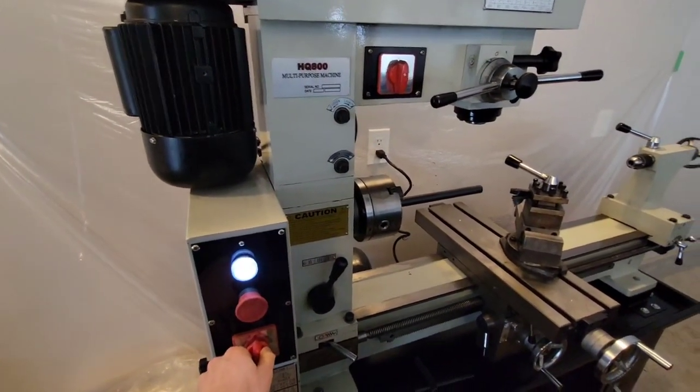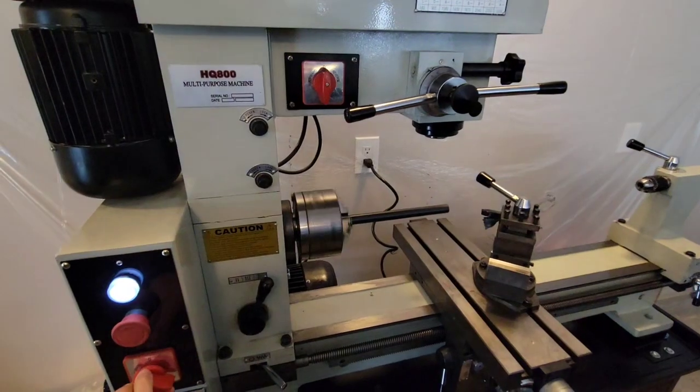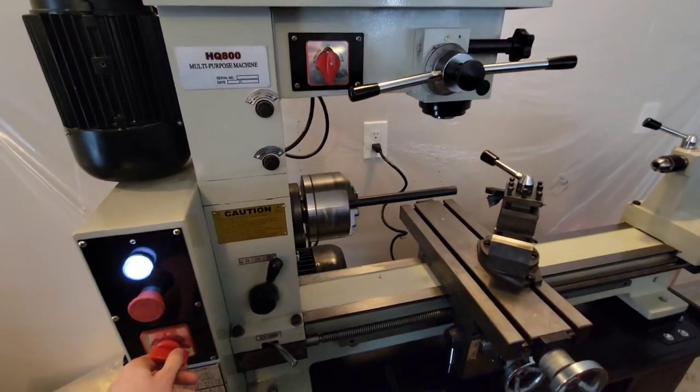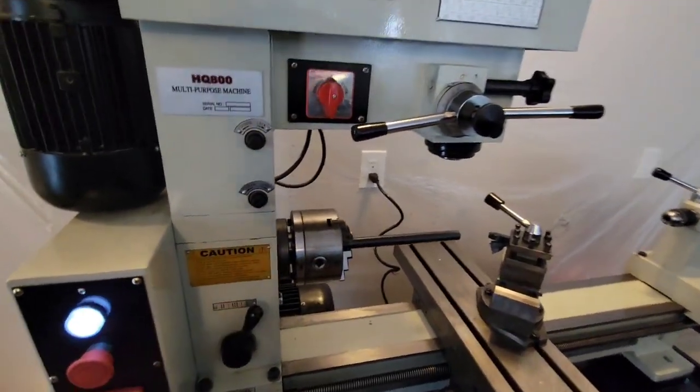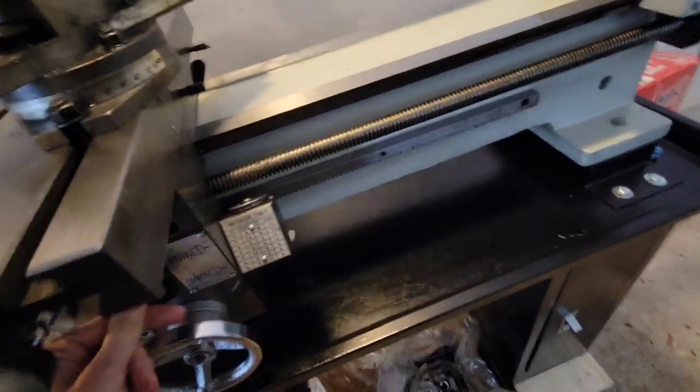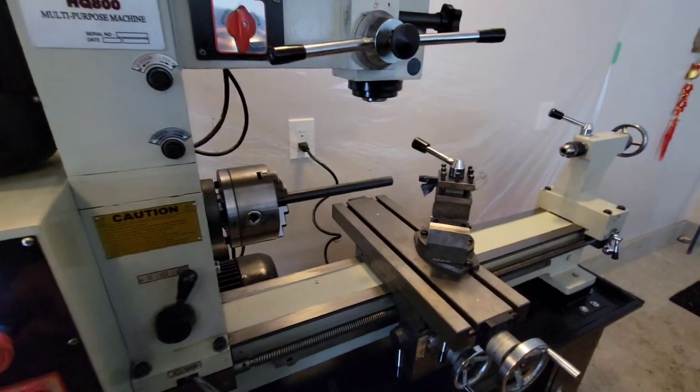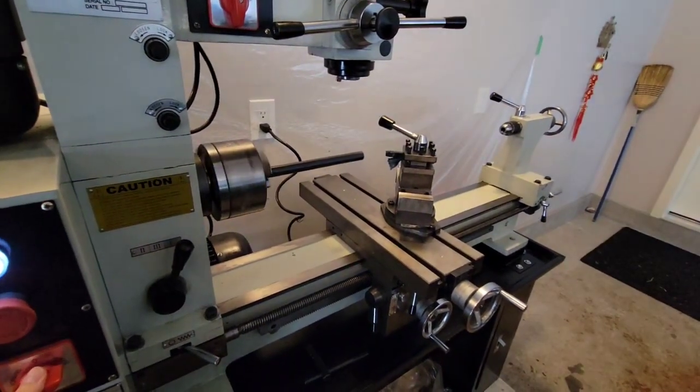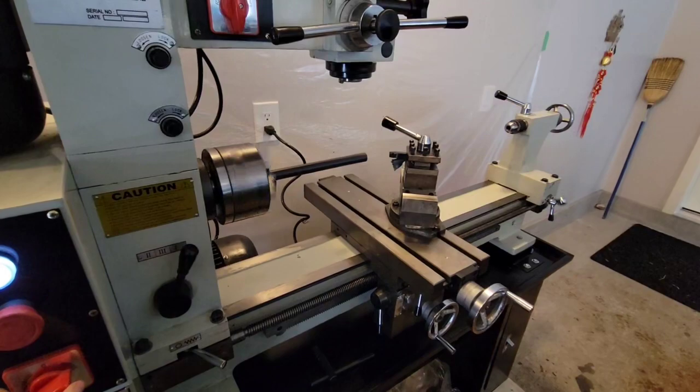And this is the control for the lathe to turn it forward. Turn it, okay. Oops, sorry, I'll disconnect that cross slide first. Then to reverse it, it's reversed.